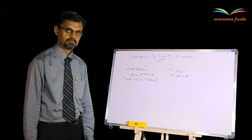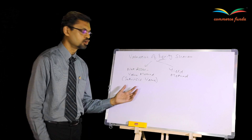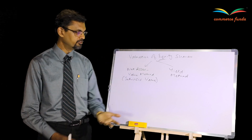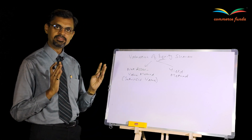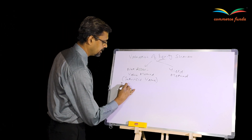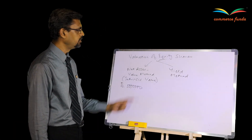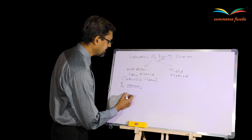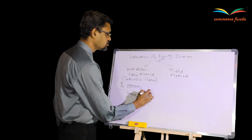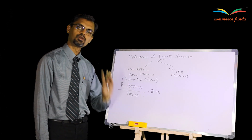The net asset value method, or the intrinsic value method, is based on the assets belonging to the equity shareholders. So if I say the overall net assets belonging to the equity shareholders is 50 lakhs, and there are one lakh equity shares in the company, then per share the value is 50 rupees — that is nothing but the intrinsic value.